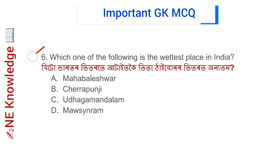Question number 6: Which one of the following is the wettest place in India? Options include Mahabaleshwar and Cherrapunji. Correct answer: Option D — Mawsynram. Mawsynram is a village in the East Khasi Hills district of Meghalaya and is the wettest place in India.